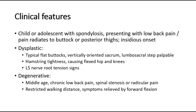For clinical features, a child or adolescent with spondylolysis typically presents with lower back pain or pain radiating to the buttock or posterior thigh; onset is usually insidious and related to sports. Those with dysplastic spondylolisthesis may have typical flat buttocks, a vertically oriented sacrum, and a palpable lumbosacral step. Hamstring tightness is also common and may result in flexed hips and knees.